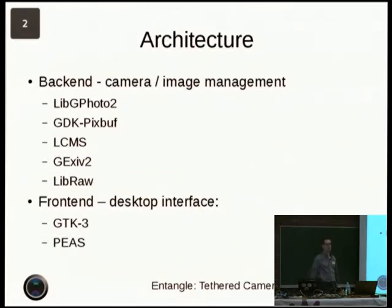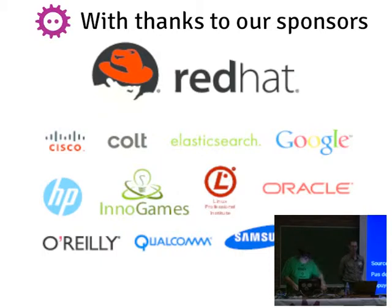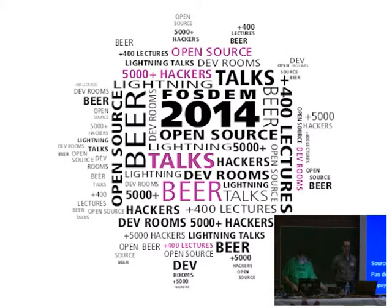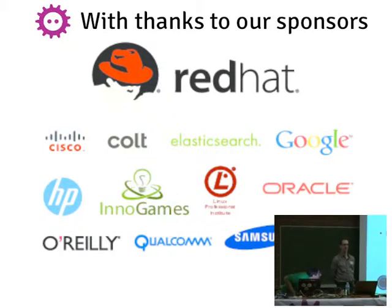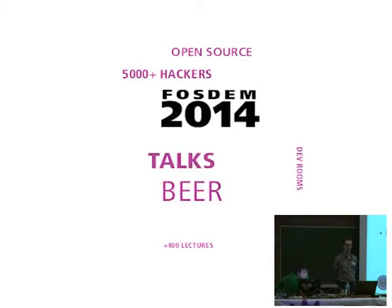The architecture: the program is split into two separate pieces. The back end handles all the interaction with the camera. It uses libgphoto, which is an open-source library for controlling digital cameras, doing all the guts of the communication. GdkPixBuf is used for manipulating downloaded images. LCMS handles color management. EXIV is a library for extracting metadata from image files. And LibRaw processes all the raw files downloaded from the camera.